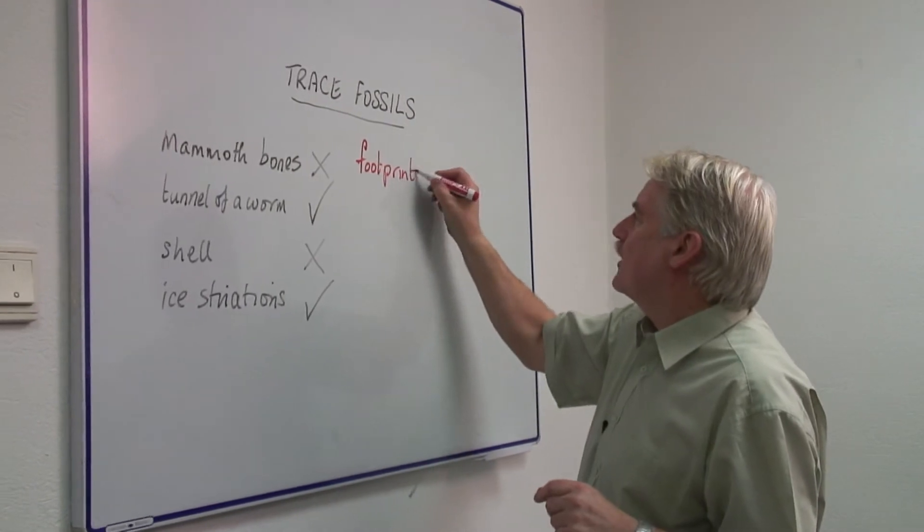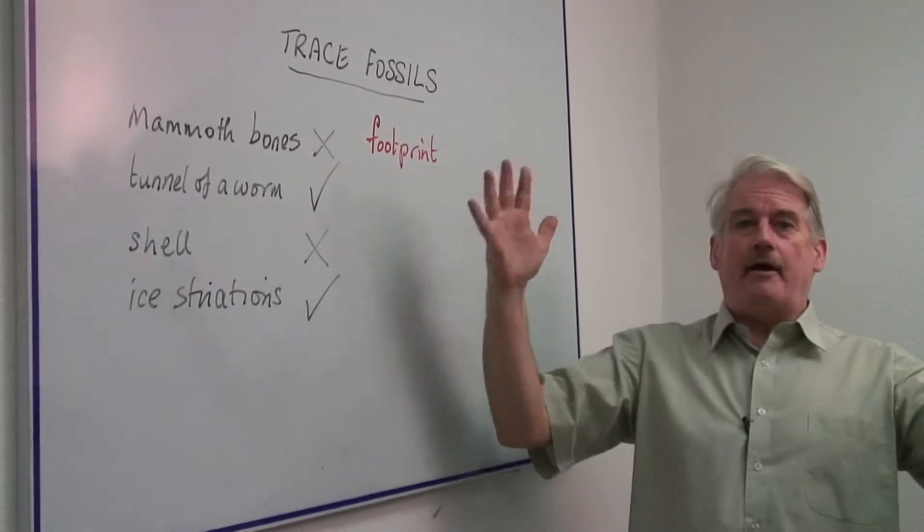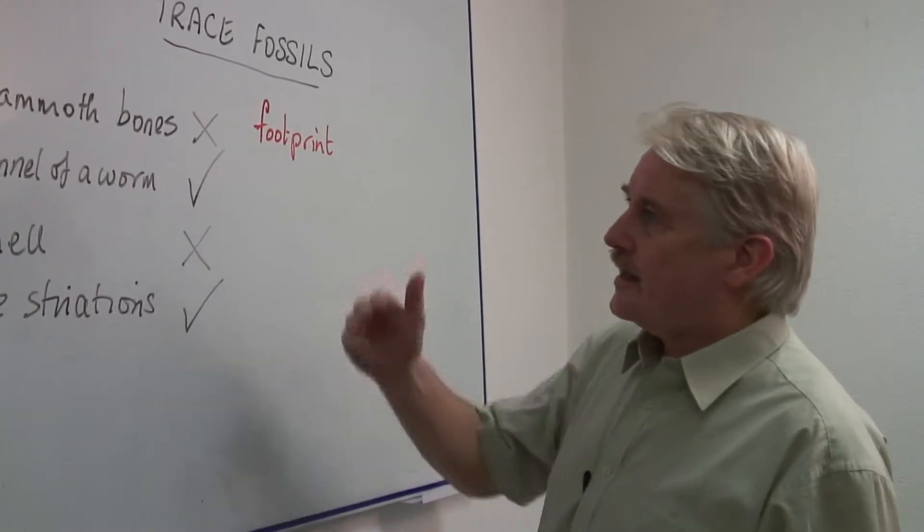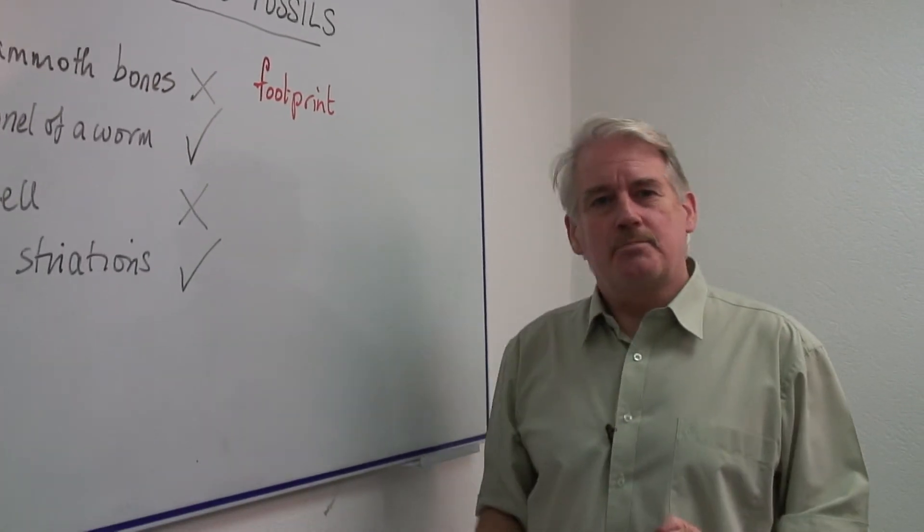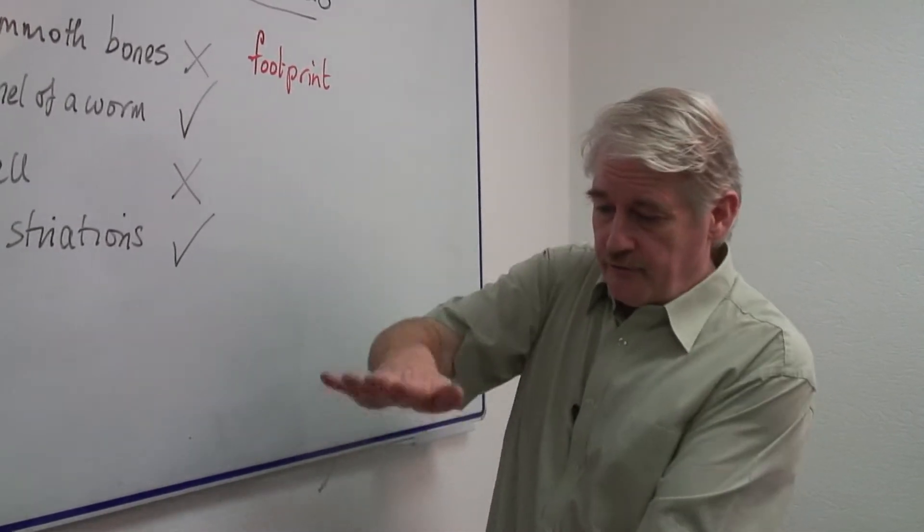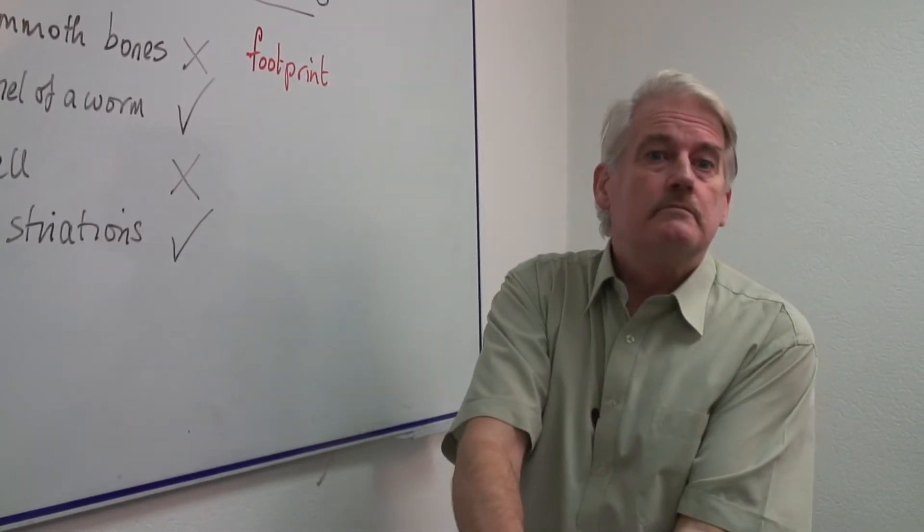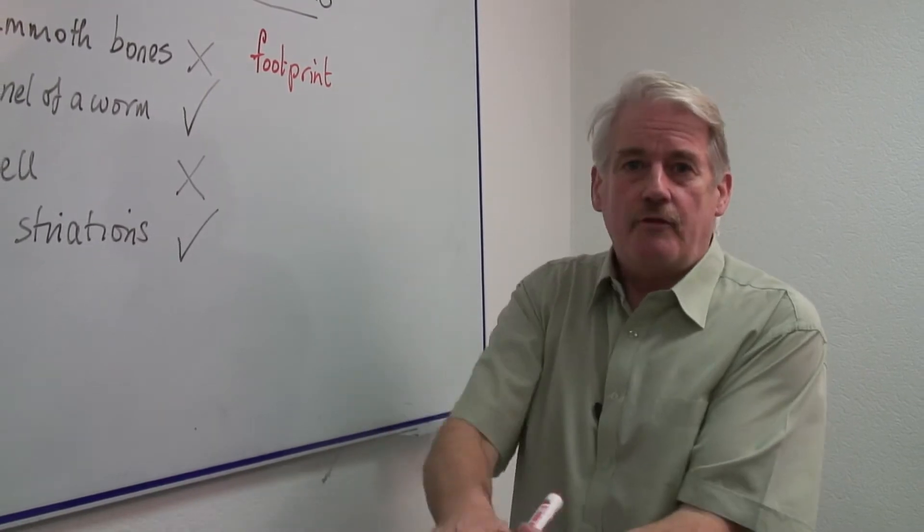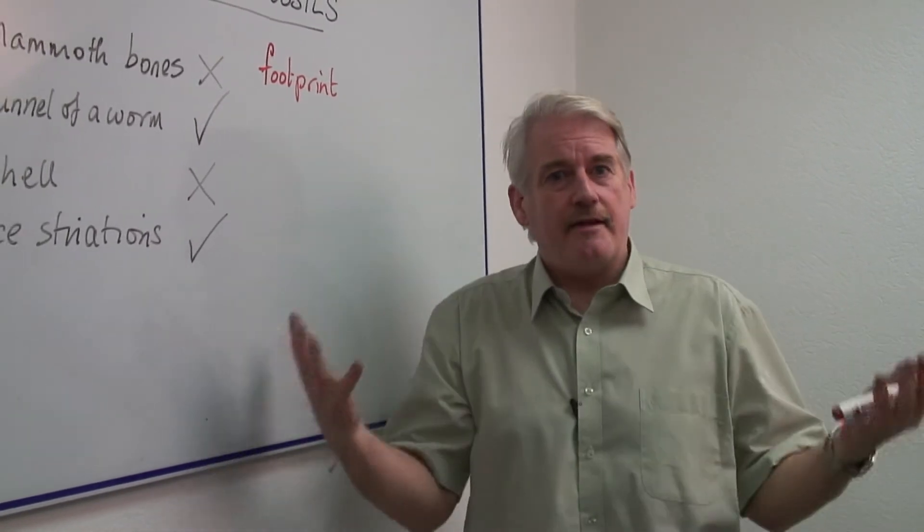So if I find a huge footprint about this across and I find next to it a mammoth, it's probably a mammoth footprint. I can tell a lot from that footprint. How far it sank into the mud—that tells me how soft the mud was and how heavy the mammoth was.